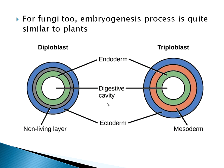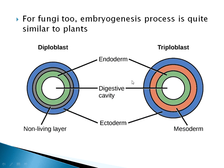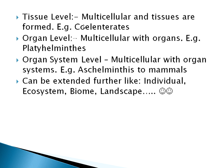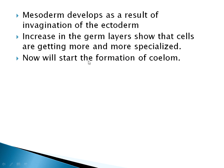This triploblastic organization is seen in Platyhelminthes, the flatworms. In flatworms there are layers between the endoderm and ectoderm, but there is no cavity — that is why they appear flat like a piece of paper. That cavity develops due to coelom formation. The mesoderm develops as a result of invagination of the ectoderm, and the increase in germ layers indicates increasing specialization — tissue-level and organ-level complexity.